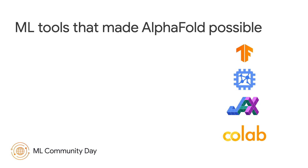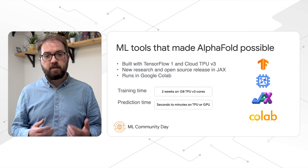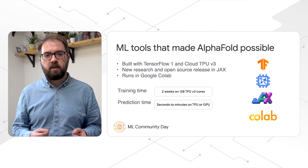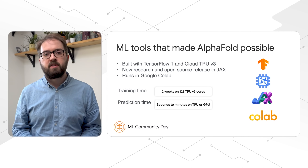Our research that led to the development of AlphaFold involved trying many different ideas. The Google ML ecosystem allowed us to iterate very quickly and then to scale up our research. AlphaFold was trained with 128 TPU v3 cores over a couple of weeks, which is actually quite cheap compared to some modern models.